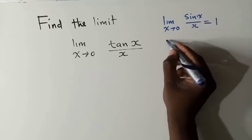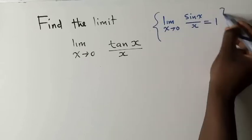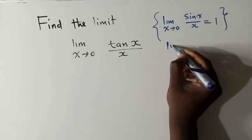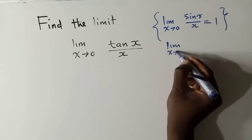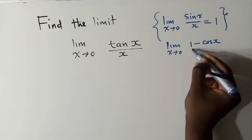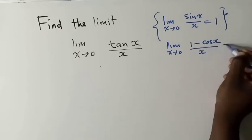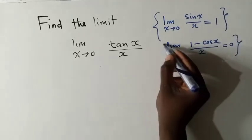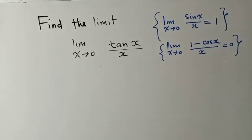And also another one, so this is property number 1 which we need. Another one is limit as x approaches 0 of (1 minus cos(x))/x is equal to 0. So, these are important limits we need.